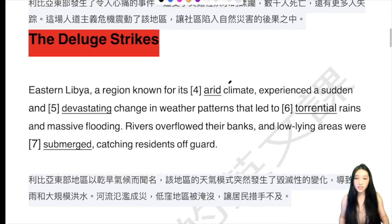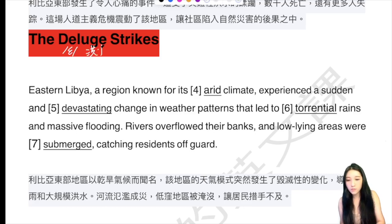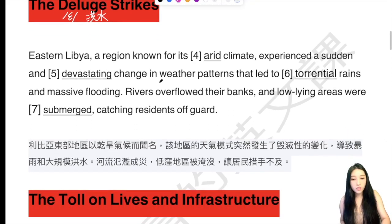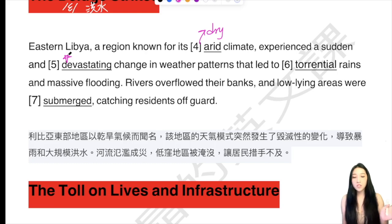所以首先下面我們看到的是：當我們講到洪水的時候，我們都一定知道是flood。這個單字它也是洪水，它叫做deluge，d-e-l-u-g-e，它也是洪水。所以洪水襲擊Eastern Libya，這個地區，它是以arid — 就是dry，乾燥的氣候為特色的地方。但是這個地方experienced a sudden and devastating — 就是破壞性的，跟上面那個catastrophic是一樣的 — change in weather patterns，它的天氣模式突然發生了非常可怕、毀滅性的變化。